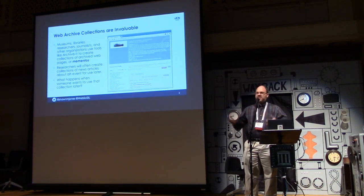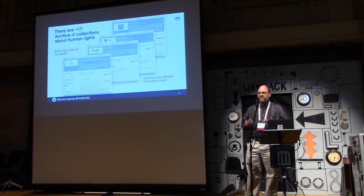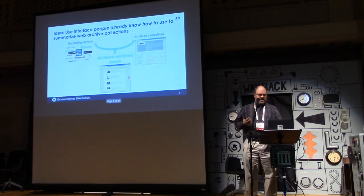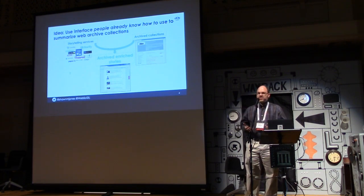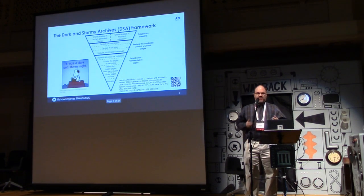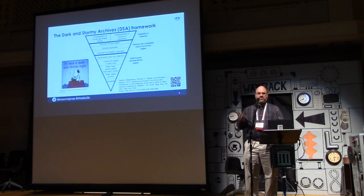Researchers often create these collections, but someone comes to them later and has to use them. The question becomes: if there are a bunch of collections about the same thing, which one meets my needs? Which one is different from the other? One of our colleagues, Yasmeen Alnawamani, came up with this idea along with Michelle Weigel and Michael Nelson — to use an interface that people already know in storytelling services as a summary visualization of web archive collections. They developed something called the Dark and Stormy Archives Framework. I'm taking over this work and trying to figure out why it works and how we can make it better.